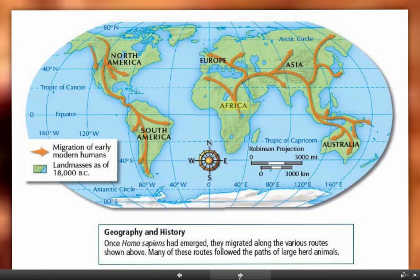By looking at the material remains and artifacts that have been found, the oldest of those remains have been found solely in Africa, particularly in the central eastern part of Africa near a place called the Great Rift Valley. From there, over thousands of years, humans eventually migrated and moved to other parts of the world — gradually into northern Africa, from northern Africa to the Middle East and Europe, from there to Asia, eventually Australia, and then even North America and South America. This took tens of thousands of years and would have happened very slowly over a very long period of time.